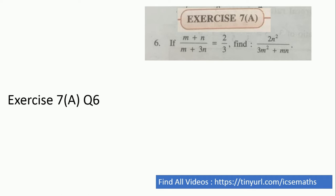Let me just quickly start this video. So we are solving question number 6 of ratio and proportion chapter where it is saying if m plus n oblique m plus 3n is equal to 2 by 3, then is asking to find 2n square oblique 3m square plus mn. That's the question.